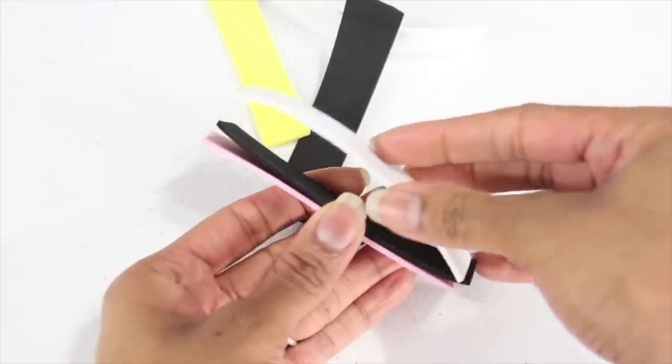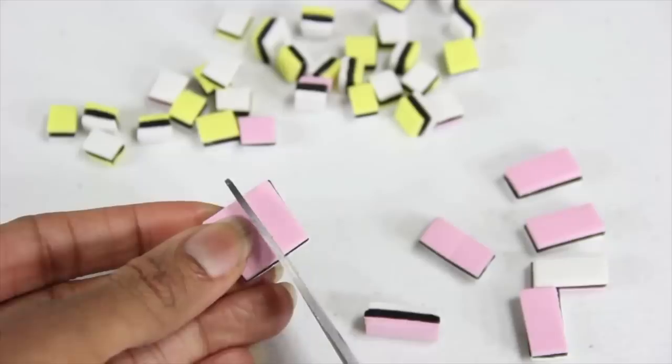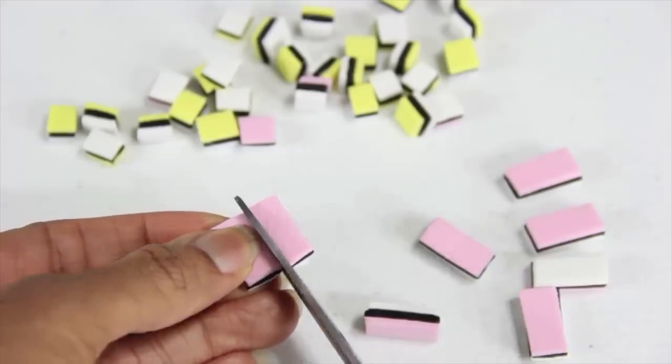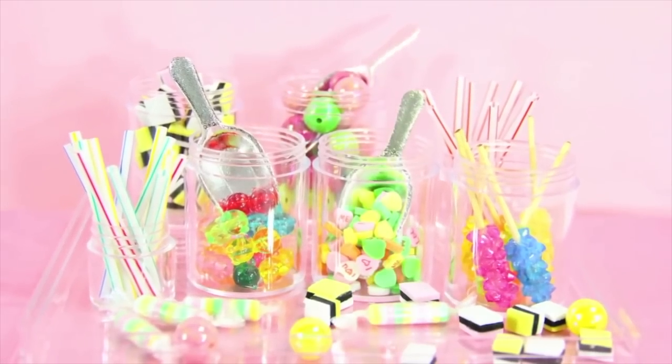To make licorice candy, I glue together strips of craft foam, then cut it into small pieces. And you're done. Happy crafting.